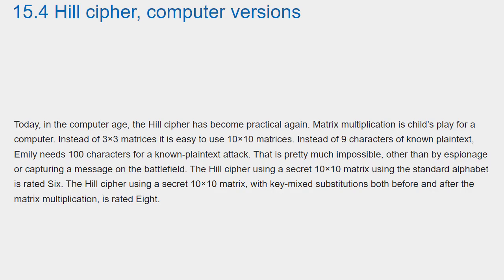Today, in the computer age, the Hill cipher has become practical again. Matrix multiplication is child's play for a computer. Instead of 3x3 matrices, it is easy to use 10x10 matrices. Instead of 9 characters of known plaintext, Emily needs 100 characters for a known plaintext attack. That is pretty much impossible, other than by espionage or capturing a message on the battlefield. The Hill cipher using a secret 10x10 matrix with the standard alphabet is rated 6.